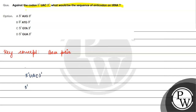So for the codon 5' UAC 3', which base pairs with A? That would be U. And the corresponding base pair for C? That would be G.